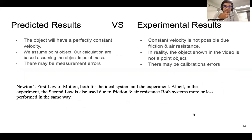In the predicted results, we predicted that the object will have a perfectly constant velocity, but in our system we cannot have it because of friction and air resistance. We also assumed that we have a point object while in reality we had a big object. But Newton's first law was correct in both of them.